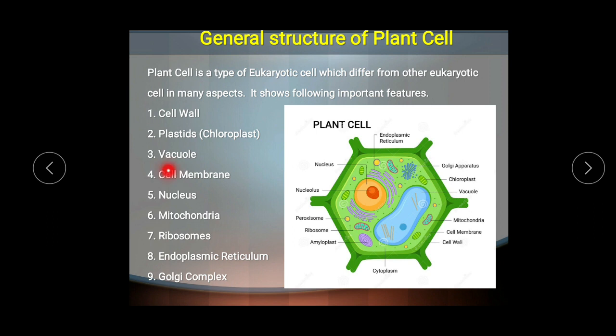The next feature is the cell membrane, also called the plasma membrane or cytoplasmic membrane. It is the outermost living membrane of the eukaryotic cell and separates the interior of the cell from the outer environment. It is made up of lipoproteins — containing both lipids and proteins — and it controls the entry and exit of molecules.